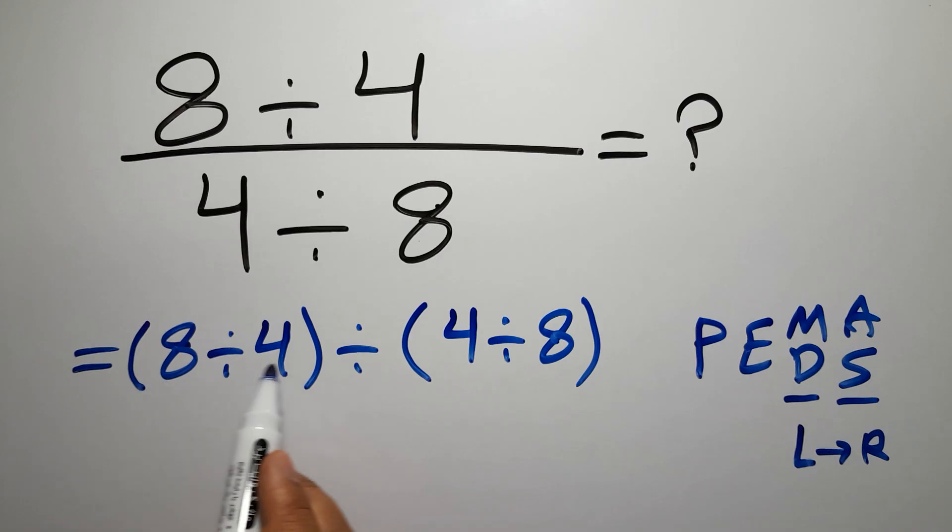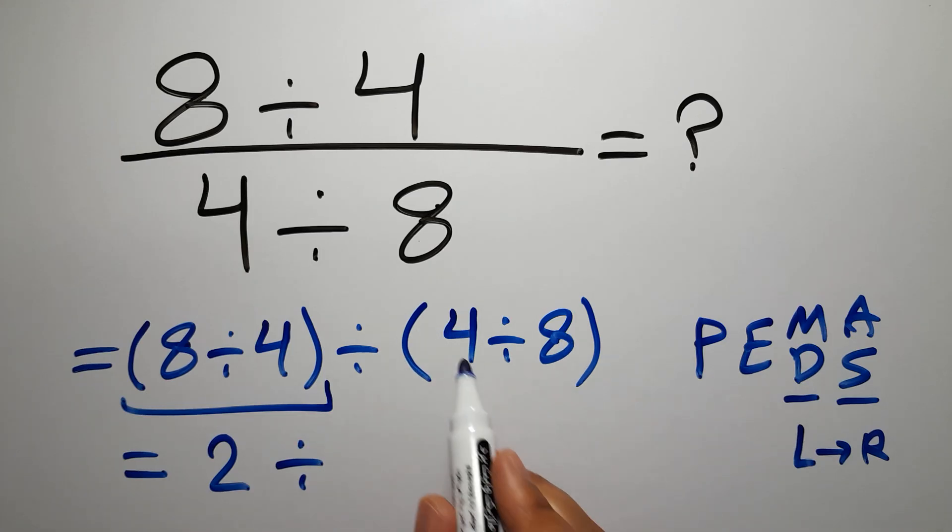The first parentheses, 8 divided by 4, which equals just 2. 8 divided by 4 gives us 2. Inside these parentheses,